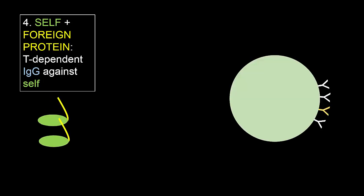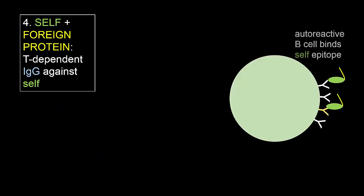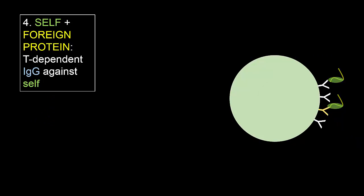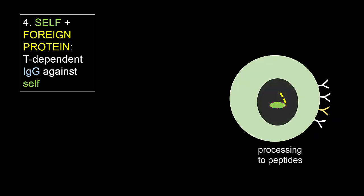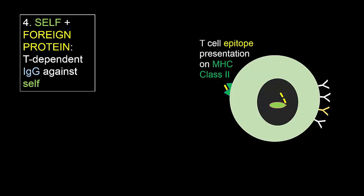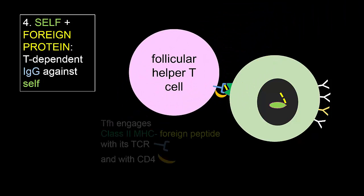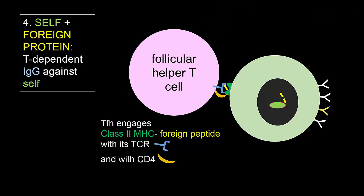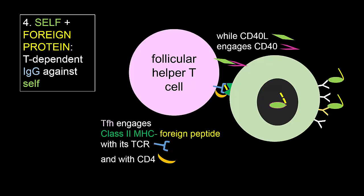If this happens, the complex may bind to a self-reactive B cell that is specific for some epitope on the self protein. The complex is endocytosed, processed to peptides, and an epitope of the foreign protein is presented on the surface of class II MHC. Along comes the appropriate follicular helper cell, which sends activation and switch signals. The T cell is anti-foreign peptide, but the B cell is anti-self.